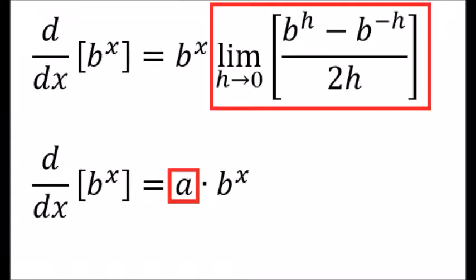If you remember from an early lesson in this series, we found the derivative of b to the x using secant lines. That gave us the limit boxed in red. This is some constant we call a. So this limit is really a scale factor.